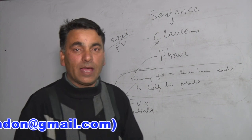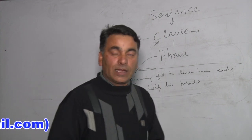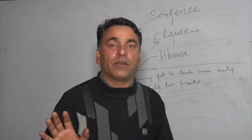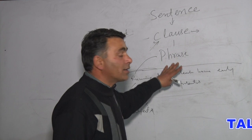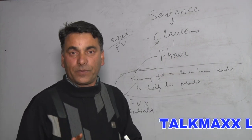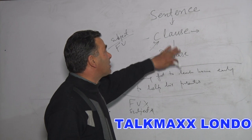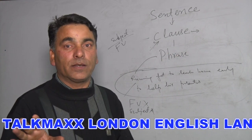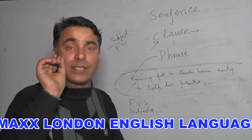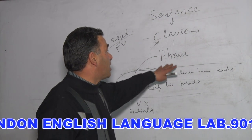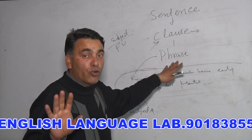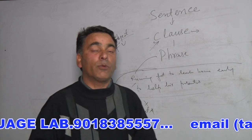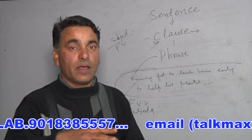A phrase is a group of words that may convey some idea, but it's not a sentence — and for that matter, it's not even a clause. What is it that makes it different from a clause? It could be part of a sentence, but it cannot be a sentence. We use it to express an idea, but grammatically it cannot be a sentence. Why not? If you remember when we talked about a sentence, we said that it contains certain elements.